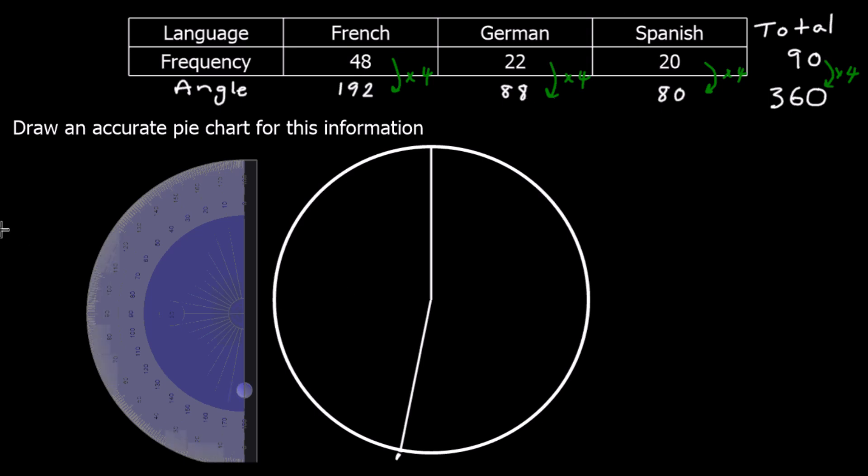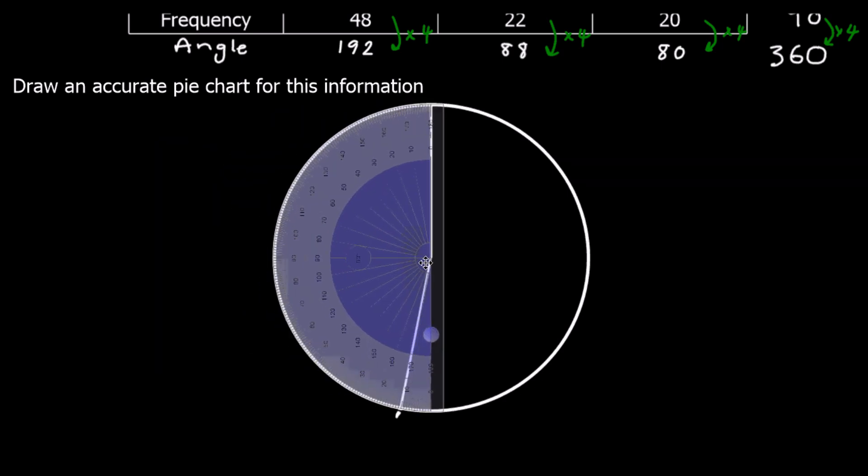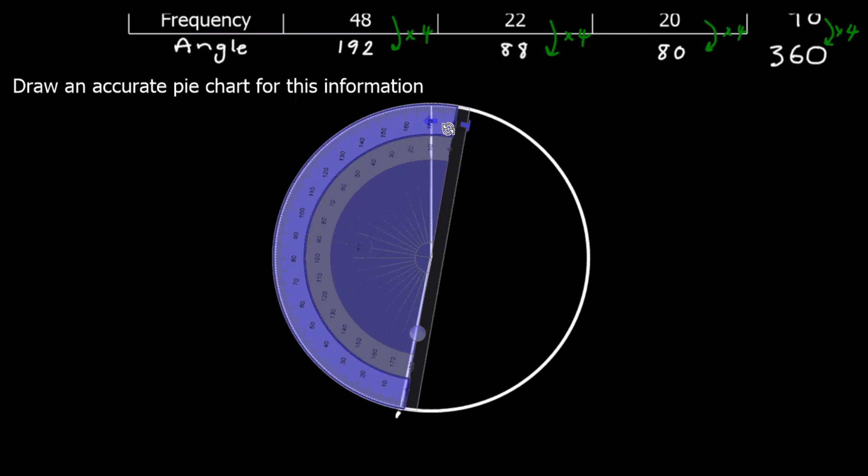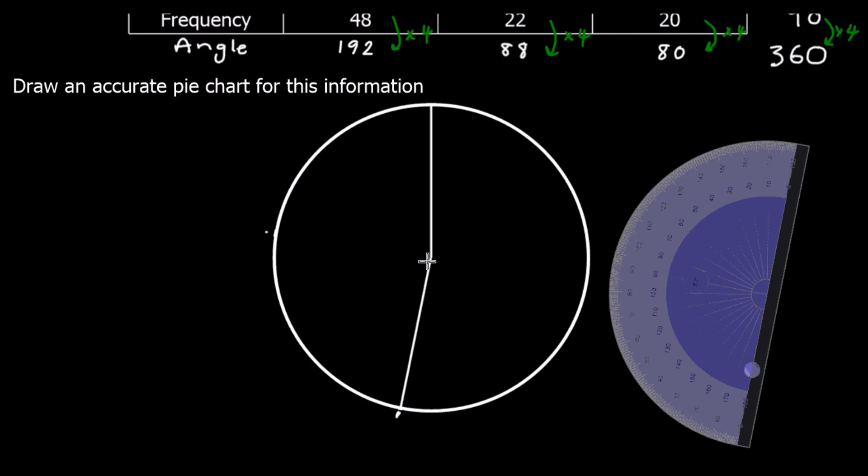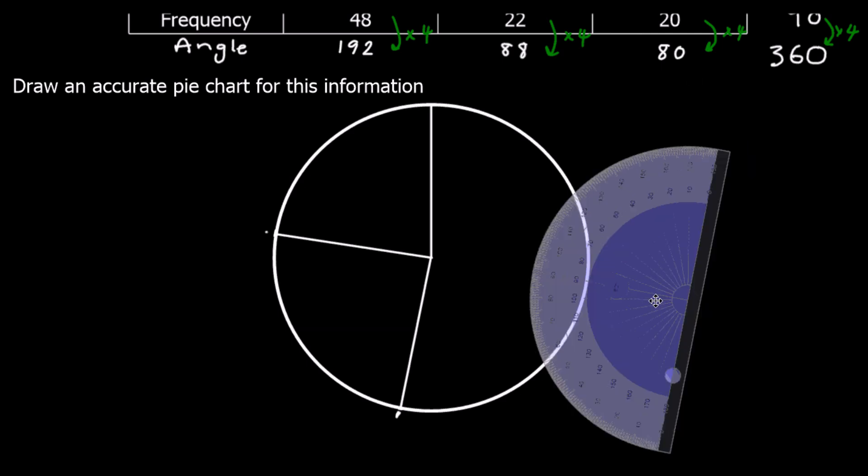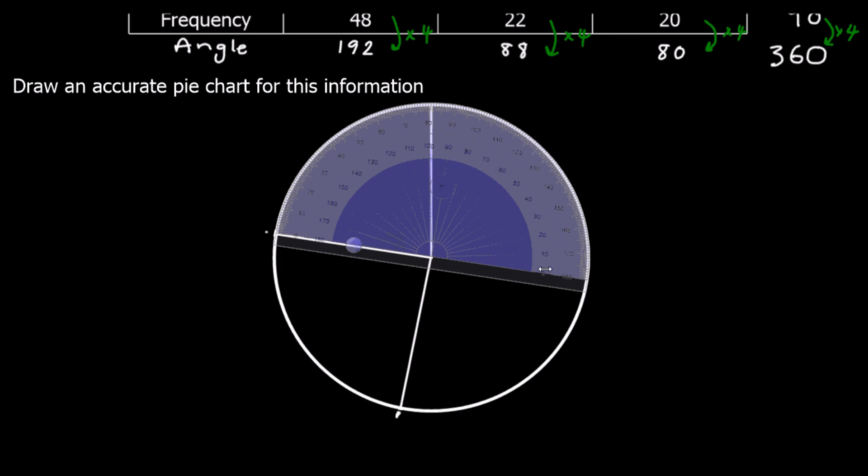Now we want to measure 88 degrees. So again, the protractor on the centre. We spin it round so zero is on the line we've just drawn. Zero is lined up, and we want 88 degrees. So from zero, we go up to 88. We get our ruler and we join that line up. Then we should have 80 degrees left. So we can measure that. And there we have 80 degrees left.